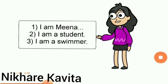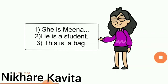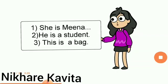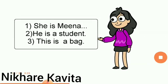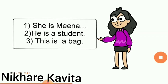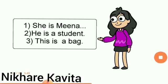Now, we will see some examples on is. See first one: she is Mina. Number 2, she is a student. Number 3, this is a bag. So, dear friends, did you observe something? The word is is used with a noun in the singular number. Means, which nouns are in the singular number, we use is with them. Like, she is Mina, she is a student, this is a bag.